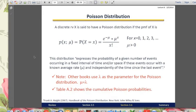Poisson distribution is a discrete distribution, and it expresses the probability of a given number of events occurring in a fixed interval of time and or space, if these events occur with a known average rate and they're independent.